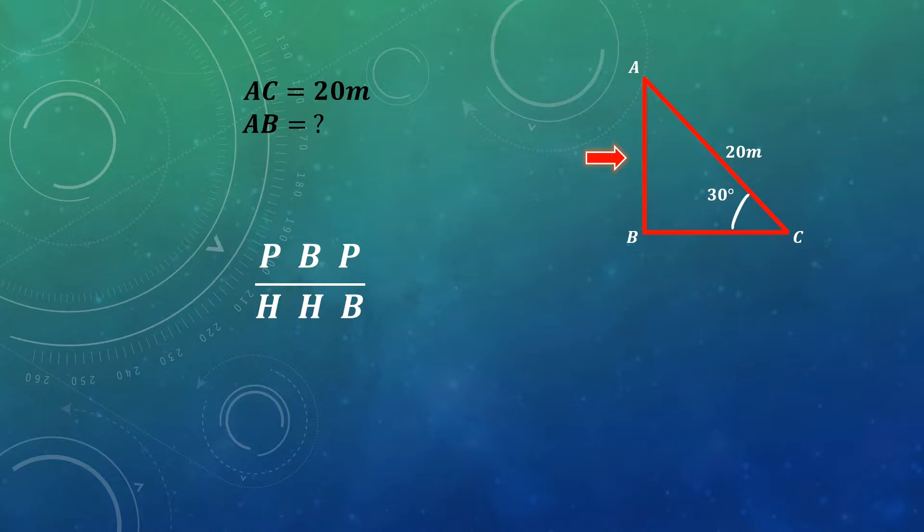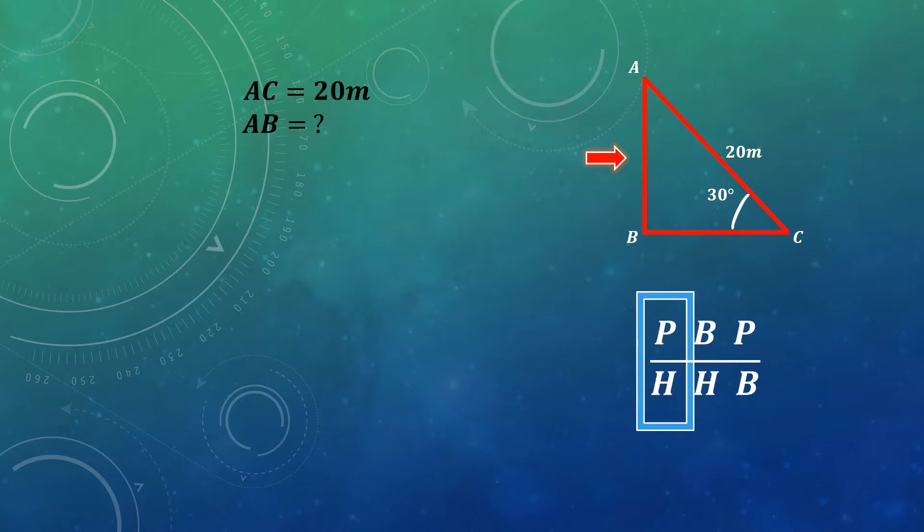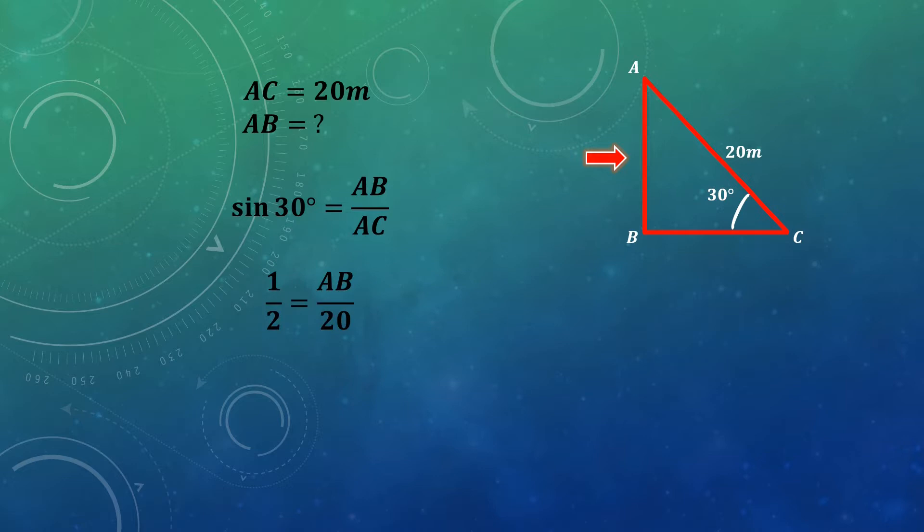I am only concerned with hypotenuse and perpendicular, so I can write sin 30 degrees value as 1 upon 2. I can write 1 upon 2 is equal to AB upon 20, because AC is 20 given to us.